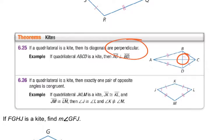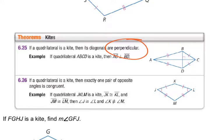Remember: the diagonals of a kite are perpendicular. The two angles that are between the non-congruent sides — in this case J and L — are congruent to each other, while K and M are not congruent. Also, the diagonal extending between the congruent sides — here AC — bisects the angles it touches, making those two angles congruent. The other diagonal does not bisect its angles.